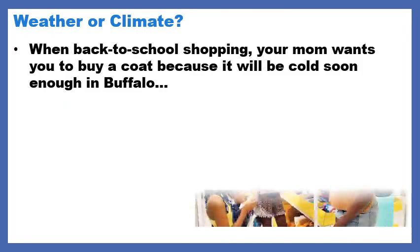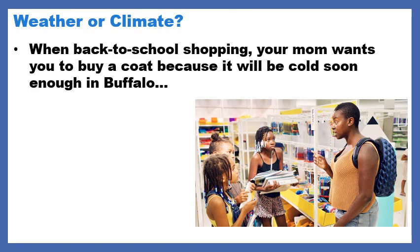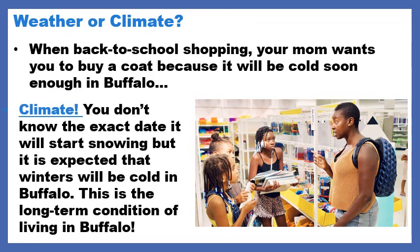Next example: when back-to-school shopping, your mom wants you to buy a coat because it'll be cold soon enough in Buffalo. Is your mom using weather or climate to tell you that you need a coat? Climate. You don't know the exact date it'll start snowing, but your mom expects that winters will be cold in Buffalo — this is the long-term condition, or climate, of Buffalo. So you know you're going to need a good winter coat year after year.